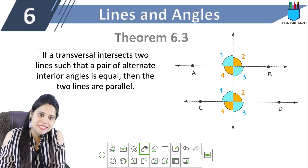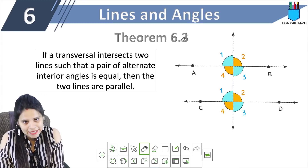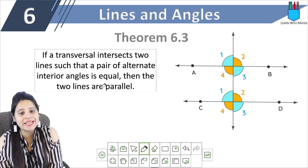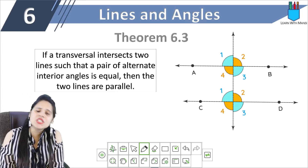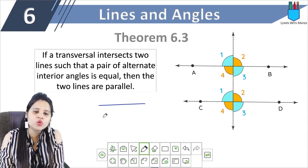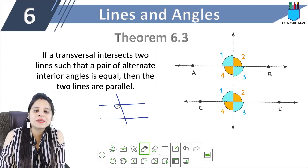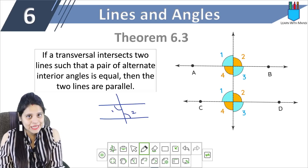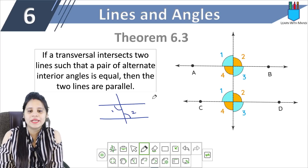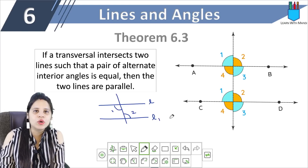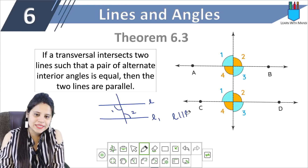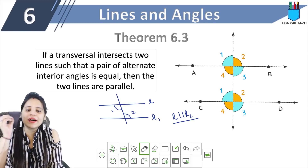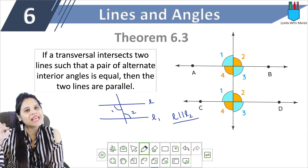Theorem 6.3: if a transversal intersects two lines such that a pair of alternate interior angles is equal, then the two lines are parallel — same thing, opposite direction. Now you have two lines and one transversal, and you are told that angle 1 equals angle 2. Once you have proved that angle 1 and angle 2 are equal, you can say that line 1 and line 2 are parallel. If parallel is given, alternate interior angles are equal; if alternate interior angles are proved equal, then lines are parallel.